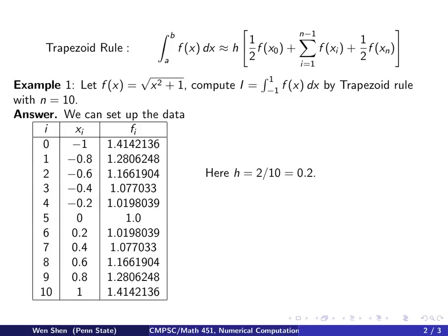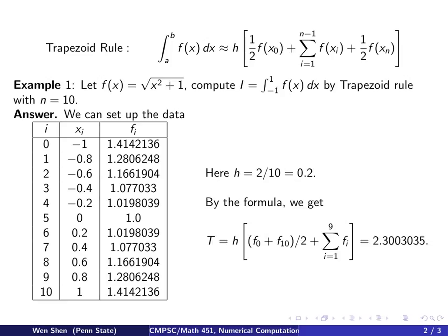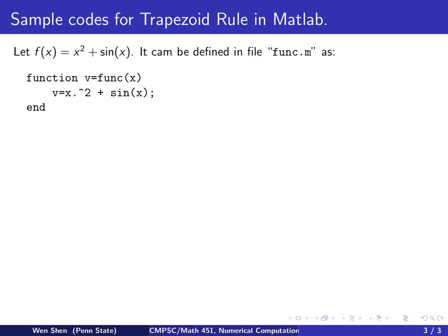In this example, the grid size is h = (interval length 2) / 10 = 0.2. We apply the formula: T = h × [(f₀ + f₁₀)/2 + sum of all intermediate values from index 1 to 9]. Computing this with a calculator gives the value 2.3003035.